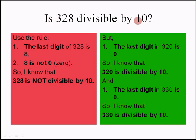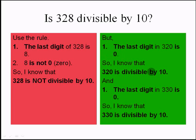Is 328 divisible by 10? Use the rule: the last digit of 328 is 8. Since 8 is not 0, I know that 328 is not divisible by 10. But the last digit in 320 is 0, so I know that 320 is divisible by 10. Likewise, the last digit in 330 is 0, so 330 is also divisible by 10.